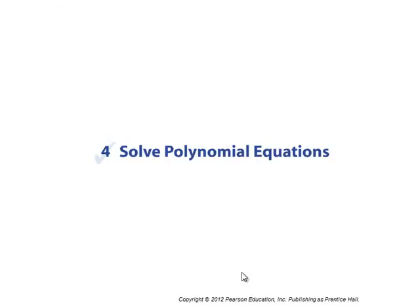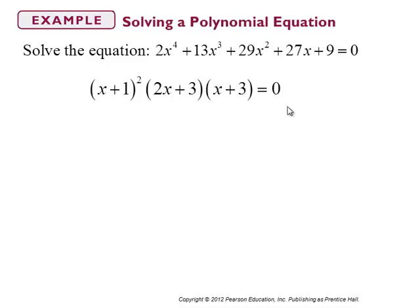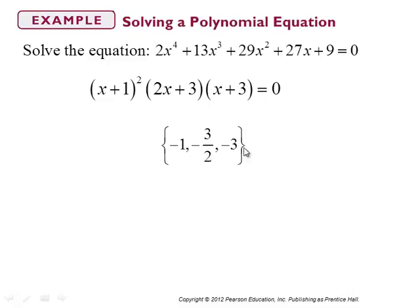When we talk about solving polynomial equations, it really means going through the process of finding the real zeros. Those real zeros will be the solutions to the equation where you have zero on the right-hand side. Taking that previous polynomial set equal to zero and factoring it, we set each factor equal to zero and solve for x, giving us three real solutions.